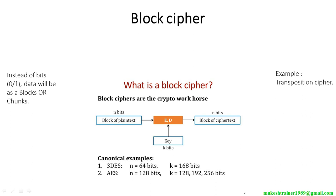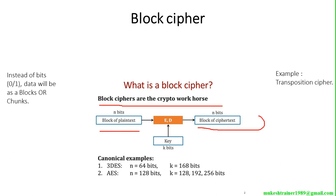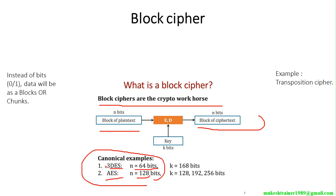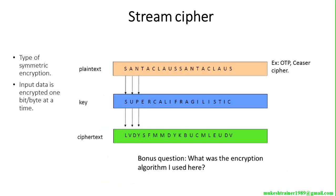Next is block cipher. Block cipher is the crypto workhorse: it takes n-bit blocks of plain text and produces blocks of cipher text. For example, 3DES uses 64-bit blocks and AES uses 128-bit blocks. These are the canonical examples — 3DES and AES encryption — and we will talk more about them in coming slides.